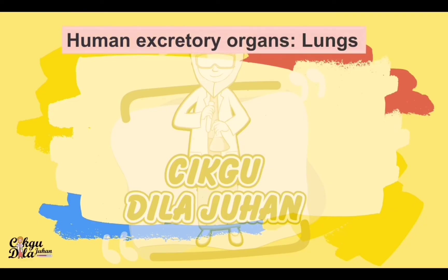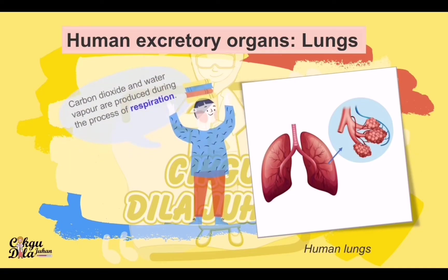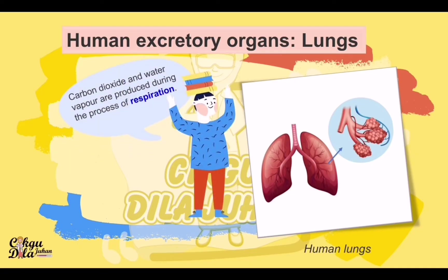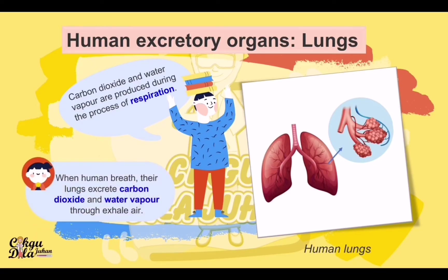Human excretory organs — lungs. This is the human lungs. Carbon dioxide and water vapor are produced during the process of respiration. When humans breathe, their lungs excrete carbon dioxide and water vapor through exhaled air.